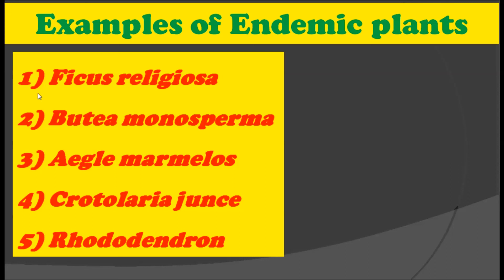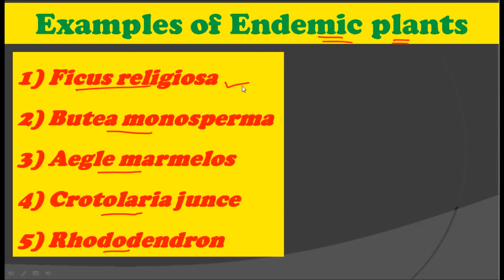For the exam, you should remember some examples of endemic plants. The five plants to note down in your notebook are: Ficus religiosa, Butea monosperma, Aegle marmelos, Crotalaria juncea, and Clerodendrum. Whenever in an examination you are asked to write about endemic plants, you should cite these examples.